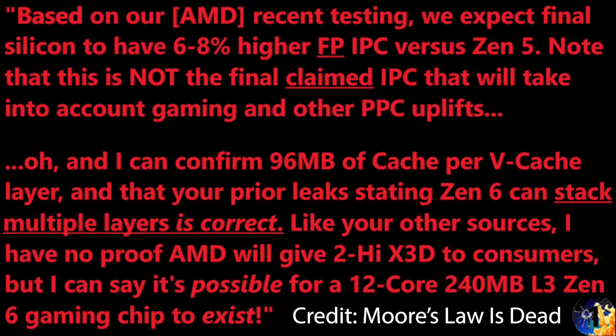There is a really interesting rumor that's popped up from Moore's Law is Dead. Based on recent AMD testing, they expect final silicon to have a 6% to 8% higher FP IPC versus Zen 5. Note this is not the final claimed IPC that will take into account gaming and other performance workloads. They also confirm that the 96 megabytes of cache per V-Cache layer is correct, and that Zen 6 can stack multiple layers. It is technically possible for a 12-core, 240-megabyte L3 Zen 6 gaming chip to exist.